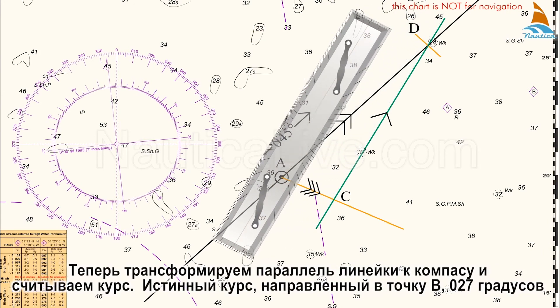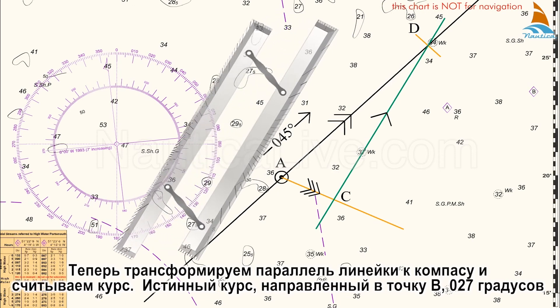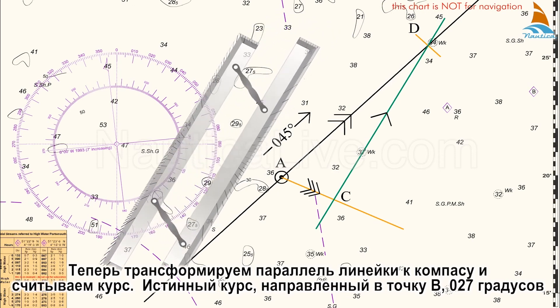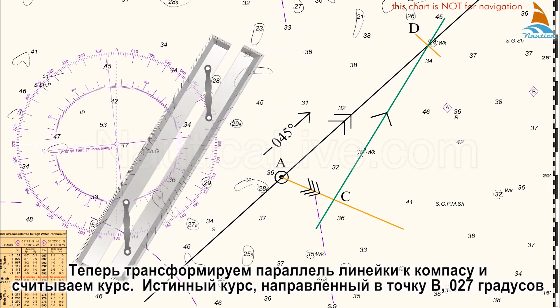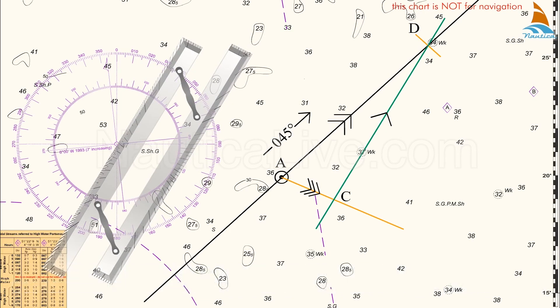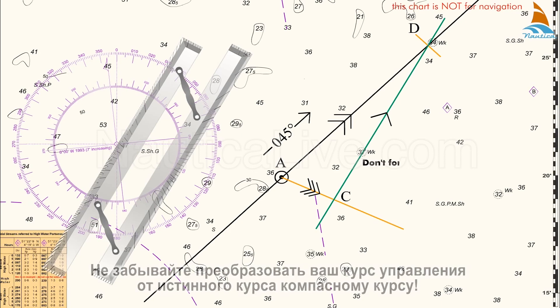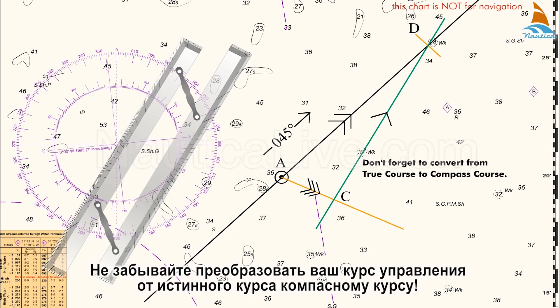Now we transfer the parallel ruler to the compass rose and read off the course. The true course to steer to point B is therefore 027 degrees. This course is required to offset the effects of the set and drift of the tide over a one hour period. Don't forget to convert your course to steer from a true course to a compass course.